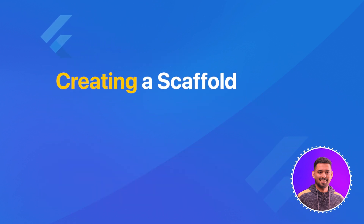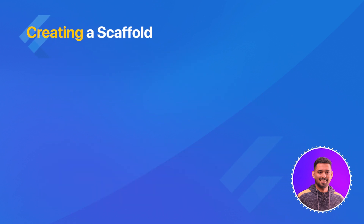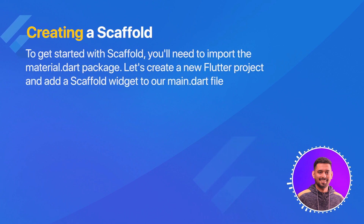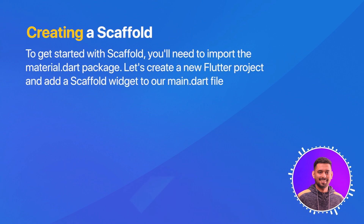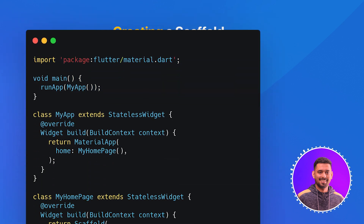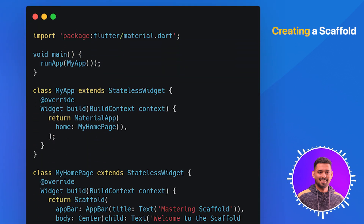Creating a Scaffold. To get started with Scaffold, you'll need to import the material.dart package. Let's create a new Flutter project and add a Scaffold Widget to the main.dart file.